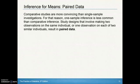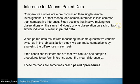Comparative studies are more convincing than single-sample investigations. For that reason, one-sample inference is less common than comparative inference. Study designs that involve making two observations on the same individual — matched pairs data — or one observation on each of two similar individuals, results in paired data. When paired data results from measuring the same quantitative variable twice, we can make comparisons by analyzing the differences in each pair. If the conditions for inference are met, we can use one-sample T-procedures to perform inference about the mean difference. These methods are sometimes called paired T-procedures.